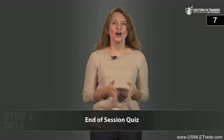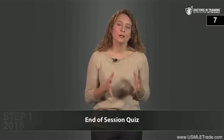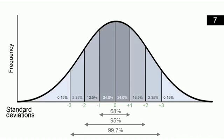Let's go through the answers. First question: in a normal Gaussian curve, what percentage of the sample population falls one, two, and three standard deviations from the mean? One standard deviation on either side of the mean includes 68% of the population; two standard deviations includes 95%; and three standard deviations is 99.7%, or practically 100%.